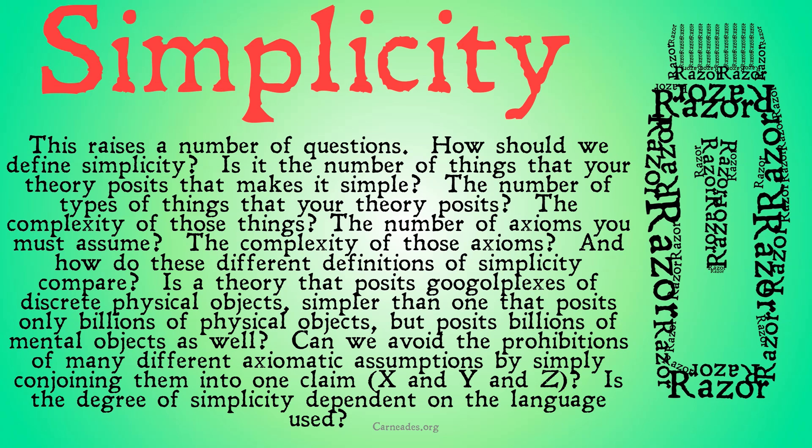Can we avoid the prohibitions of many different axiomatic assumptions by simply conjoining them all into one claim? If a theory is simpler if it only has one axiom as opposed to ten, can I just say that my one axiom was the ten I was thinking of, all conjoined together — one and two and three and four and five, etc.? Is the degree of simplicity dependent on the language that's used? Is something more complicated in English but simpler in a different language, and therefore it's not really the objective measure we're looking for in simplicity?